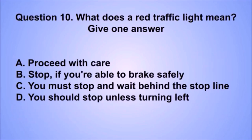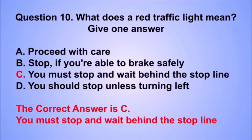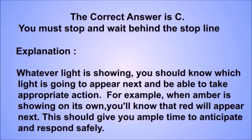Question 10. What does a red traffic light mean? The correct answer is C: You must stop and wait behind the stop line. Whatever light is showing, you should know which light is going to appear next and be able to take appropriate action. For example, when amber is showing on its own, you'll know that red will appear next — this should give you ample time to anticipate and respond safely.